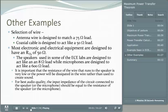There are many examples where you're provided with the input resistance or load resistance of a circuit or component. For example, antenna wire is designed to act like a 75-ohm load, while coaxial cable is designed to act like a 50-ohm load.